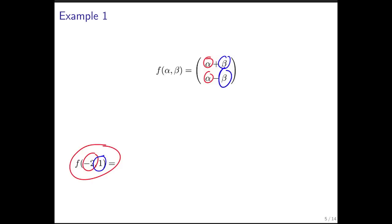So this would be the vector minus 2 plus 1, minus 2 minus 1, and if you do the arithmetic, you get the vector minus 1, minus 3. That's summarized right here.